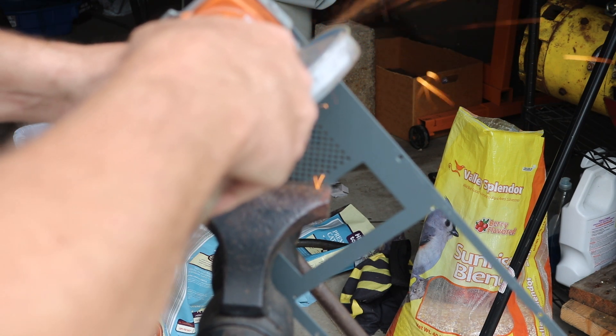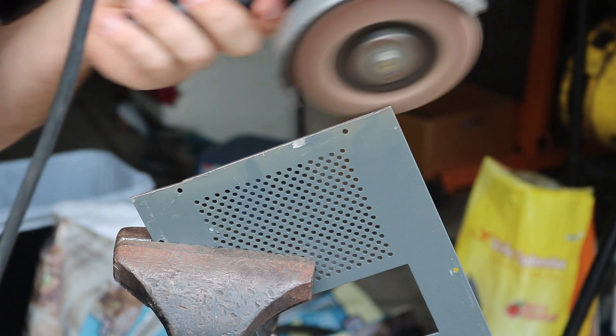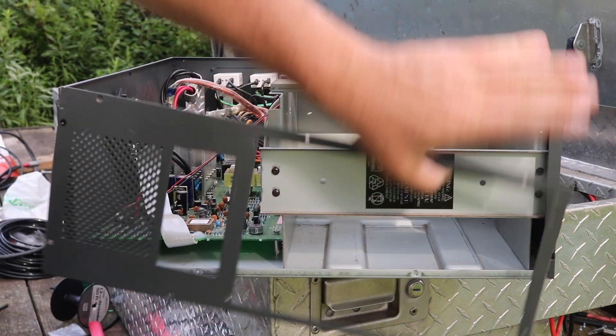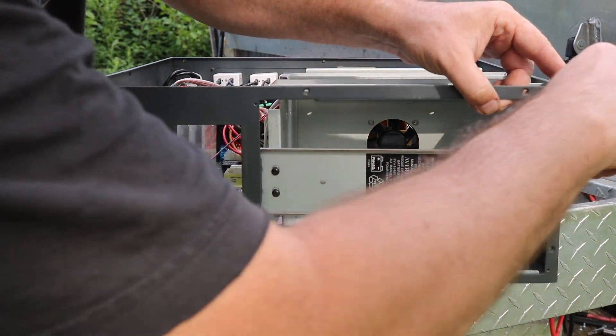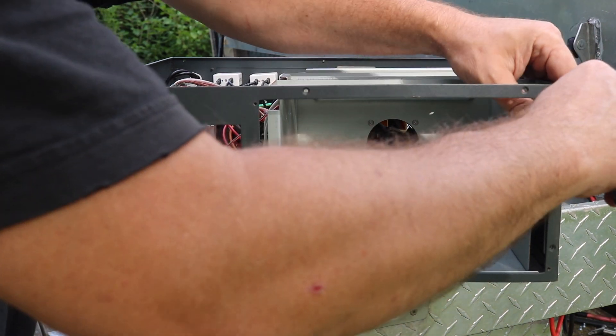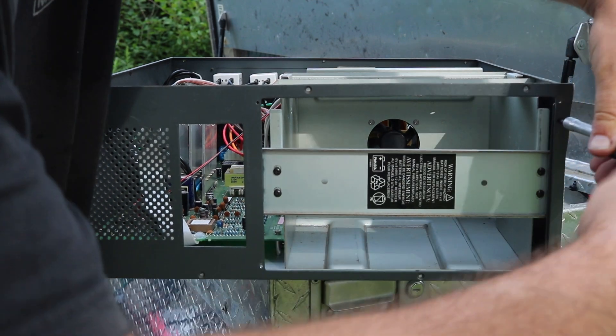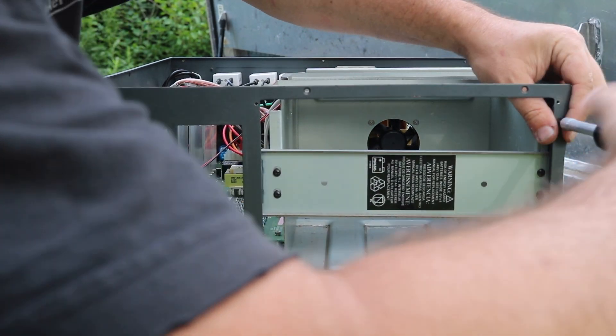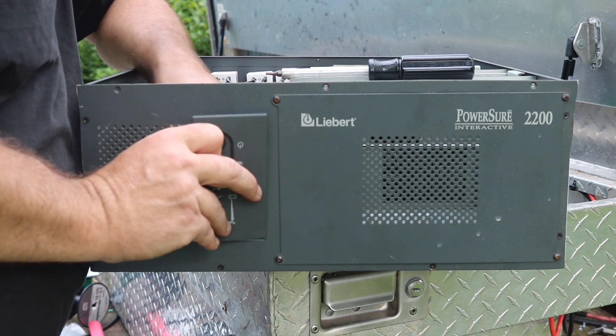After that I just used a flapper disc to sand down the rough edges. Then I reinstalled the face plate on the UPS. On the right there where you see all that empty space is where the batteries originally went - of course we don't have those anymore. I also removed a few other miscellaneous parts which were no longer needed and that would just save a little bit of weight. After that, reinstall the cover on the right and the control panel on the left.